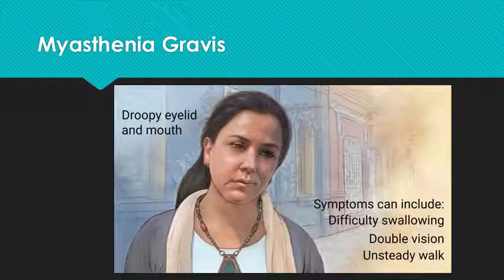Myasthenia gravis — we did talk about this, including symptoms of difficulty swallowing and unsteady walking. We know that all of the myasthenia gravis issues tend to start more in the face and the neck. Focus on what the nursing goals are — what are the things we're trying to prevent from going wrong with a patient with myasthenia gravis?